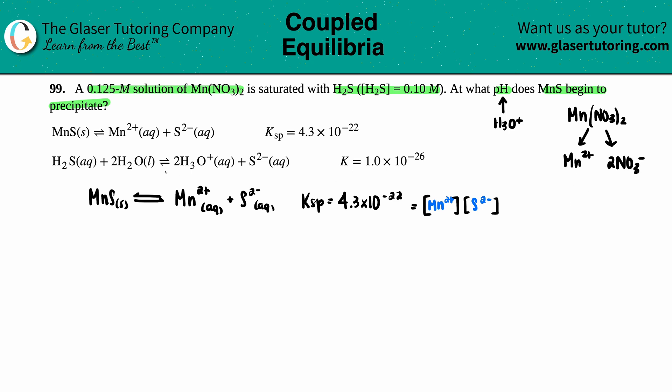But only focus on the one that would be in my equation. And in the equation, the Mn²⁺ is the one that's the same. So I don't even care about the 2NO₃⁻. So now I say to myself, I had 0.125 molarity of Mn(NO₃)₂.